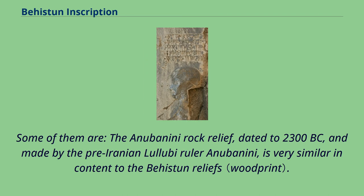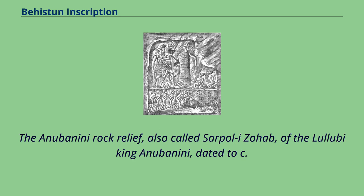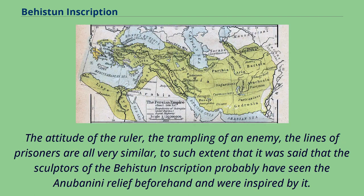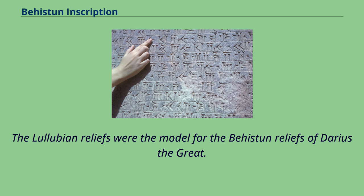Among those monuments is the Anubanini Rock Relief, dated to 2300 BC and made by the pre-Iranian Lulubi ruler Anubanini, which is very similar in content to the Behistun reliefs. The attitude of the ruler, the trampling of an enemy, and the lines of prisoners are all very similar, to such an extent that it is said the sculptors of the Behistun inscription probably had seen the Anubanini relief beforehand and were inspired by it. The Lulubian reliefs were the model for the Behistun reliefs of Darius the Great.